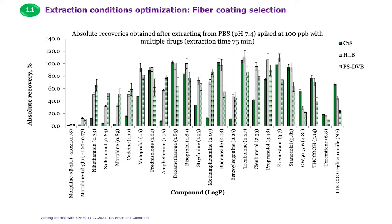This slide also shows the effect of extraction phase selection for analytes analyzed via liquid chromatography. C18 sorbent tends to extract better those compounds with higher log P values, meaning higher hydrophobicity, while coatings such as HLB (hydrophilic-lipophilic balance) provide a balanced coverage between hydrophobic analytes and more polar analytes.